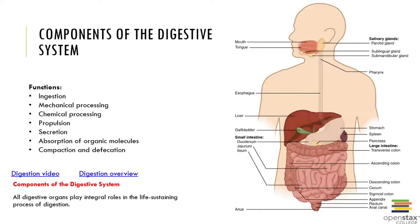Let's start off by talking about the digestive system itself. This is a system that consists of a muscular tube, which we call the GI tract — the gastrointestinal tract. We also have contained within the digestive system a variety of accessory organs.